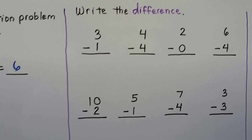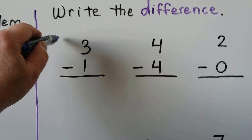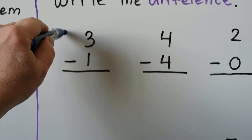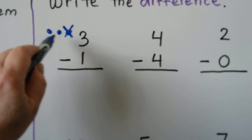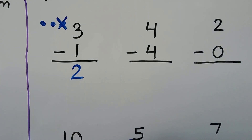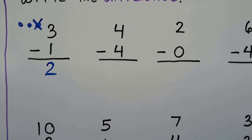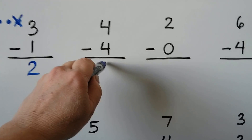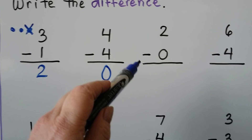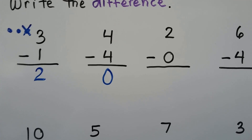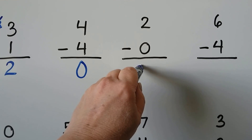We can write the difference. Three take away one — we can make three dots and take away one, leaving two. Four take away four — remember, when you take away all, it equals zero. Two take away zero — when you subtract zero, the number stays the same, so it's just two.